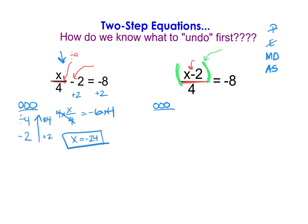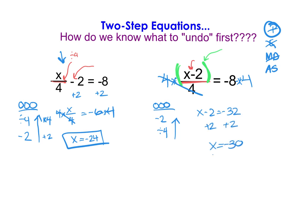For the second problem, starting with parentheses, I notice this problem has parentheses — there is a subtraction of 2 within them. So subtraction of 2 comes first in my order of operations. There are no exponents. Multiplication and division — I have a division of 4. Addition and subtraction is already handled by the parentheses. Undoing in reverse, I multiply both sides by 4 — because 4 divided by 4 is 1 — giving x minus 2 equals negative 32. Then adding 2 to each side gives x equals negative 30.